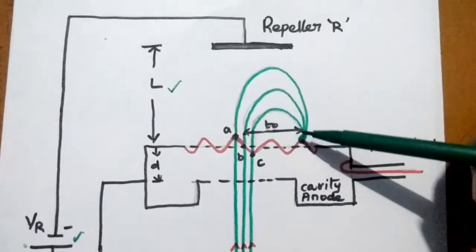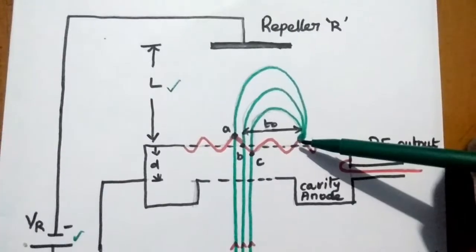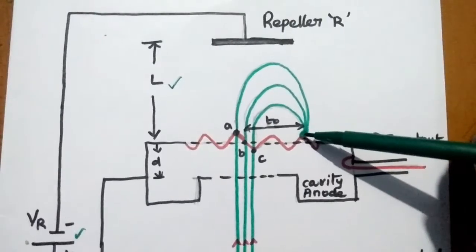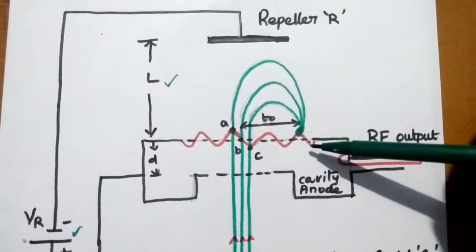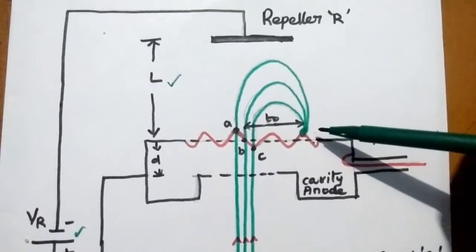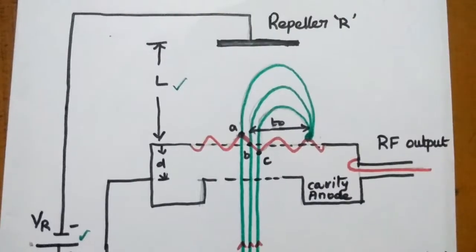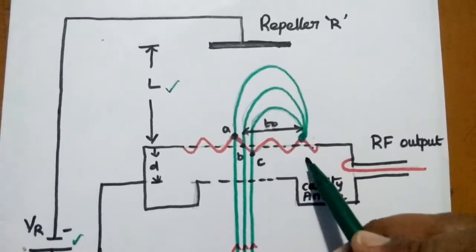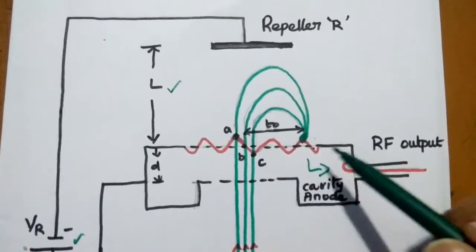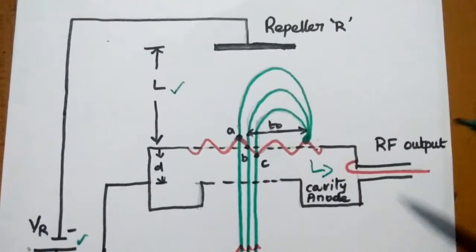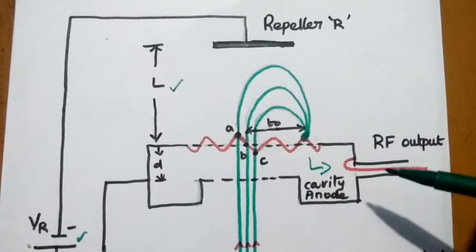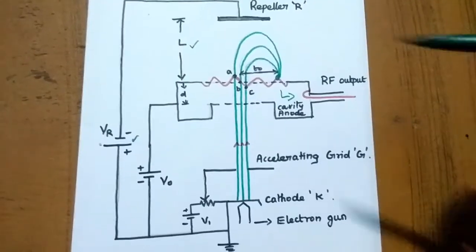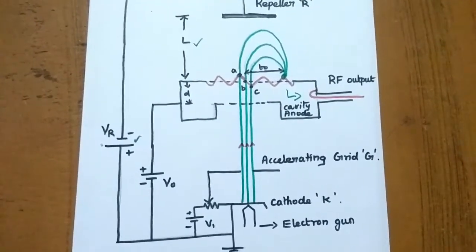When bunching happens at the positive peak, the electrons lose their energy to the RF noise signal. At that time, the noise signals are accelerated very fast because of the high kinetic energy, which produces the microwave signal. It will produce a signal in the microwave frequency range, and those signals can be taken out through this coupling method. This is the overall operating principle of the reflex klystron.